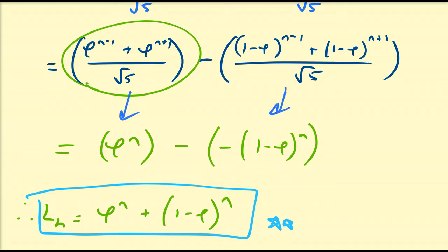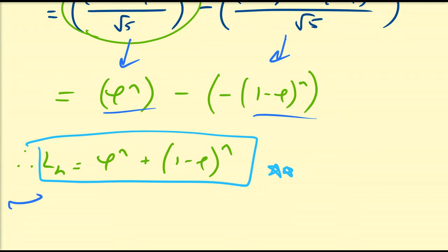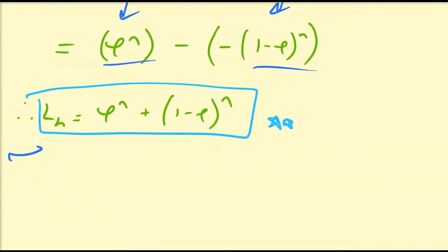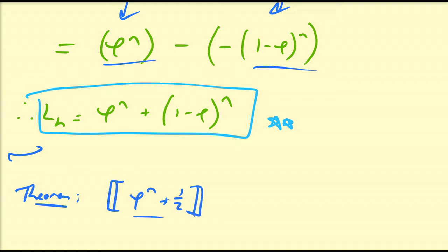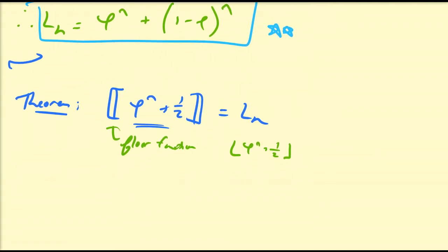You can use properties of the Fibonacci numbers we derived before to prove these basic identities. Now there's one more very important application of the Lucas numbers. The theorem — which I won't prove here as it requires tools we haven't yet discussed — states that the floor of phi^n plus one-half equals the nth Lucas number. This floor function, also called the greatest integer function, gives the greatest integer less than or equal to the expression.